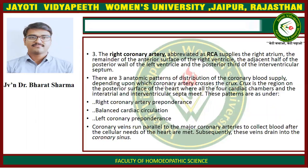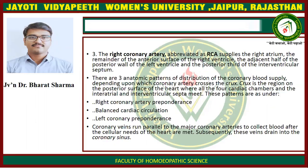Third is the right coronary artery, abbreviated as RCA, which supplies the right atrium, the remainder of the anterior surface of the right ventricle, the adjacent half of the posterior wall of the left ventricle, and the posterior third of the interventricular septum. There are three anatomic patterns of distribution of the coronary blood supply, depending upon which coronary artery crosses the crux. The crux is the region on the posterior surface of the heart where all four cardiac chambers and the interatrial and interventricular septum meet. These patterns are right coronary preponderance, balanced cardiac circulation, and left coronary preponderance.